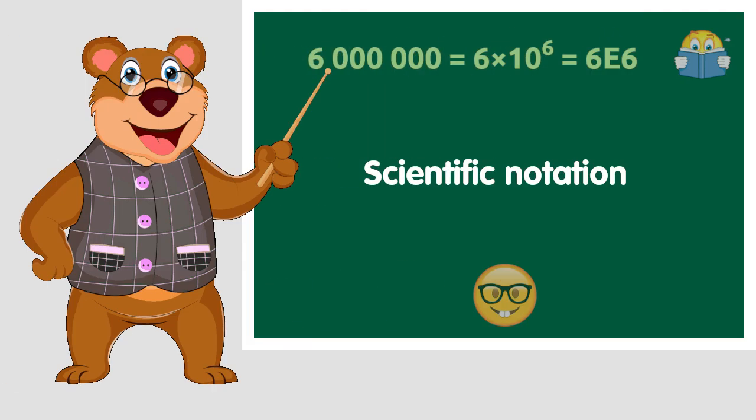Today we are going to learn about scientific notation. Scientific notation is a way of writing very large or very small numbers. A decimal number is written in scientific notation when a smaller version of the number is multiplied by a power of 10.